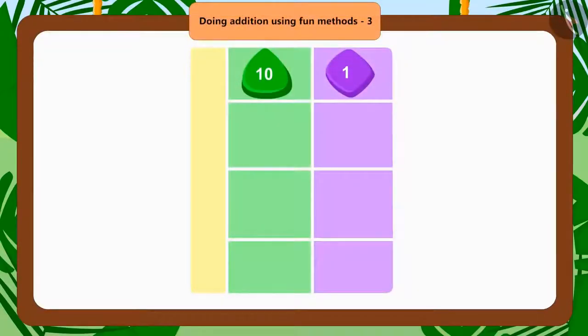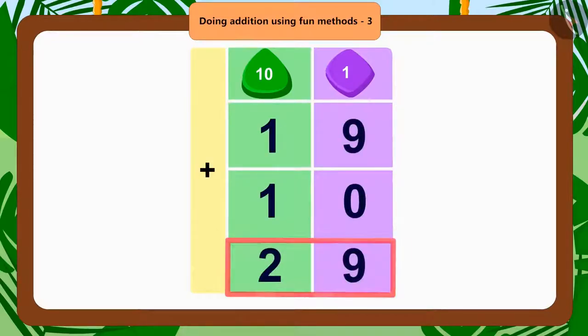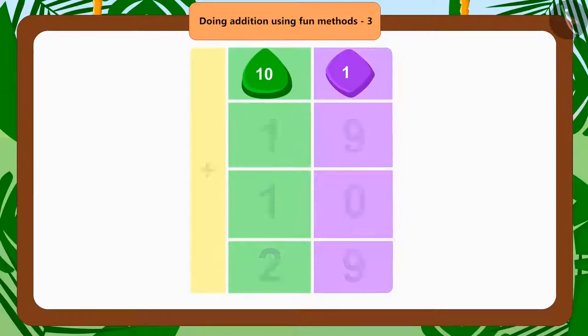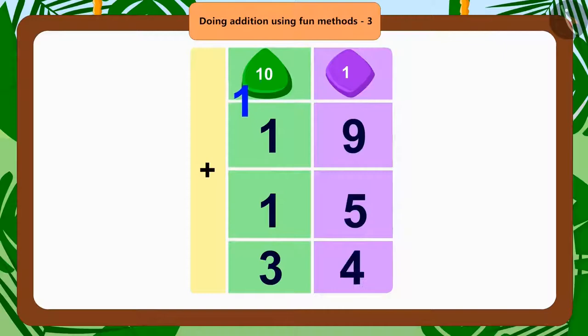Tufan began to find an answer to the puzzle. First, he added 19 and 10. He got 29. Then he added 15 to 19 and got 34.